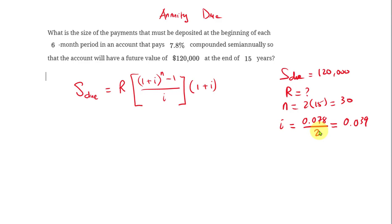Now we have everything. So I'm going to plug in the S due, the future value of the annuity is $120,000, and the R is the one that we are looking to solve for. And 1 plus i, 1 plus i is 0.039, we just found that, to the n power or 30 minus 1 over 0.039 for i.